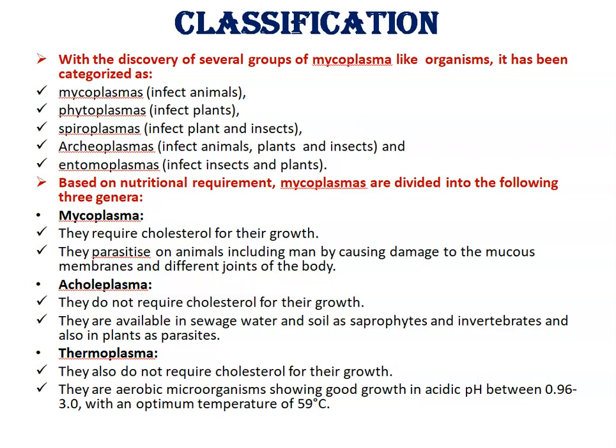Based on nutritional requirements, mycoplasmas are mainly divided into three groups. First, mycoplasma, which require cholesterol for their growth and parasitize animals including man, causing damage to the mucous membrane and different joints. Second, acholeplasmas, which do not require cholesterol for their growth; they are found in seawater, wastewater, and soil as saprophytes, and in vertebrates and plants as parasites. Third, thermoplasmas, which also do not require cholesterol, are aerobic microorganisms showing good growth at acidic pH with an optimum temperature of 59 degrees Celsius.